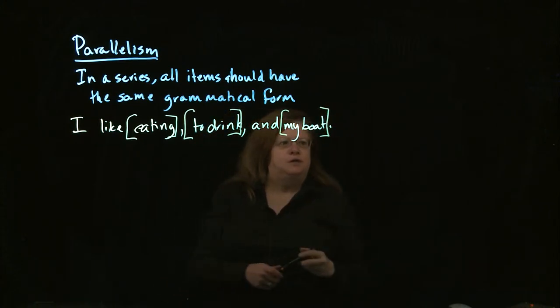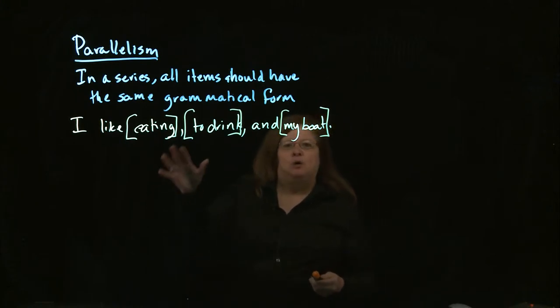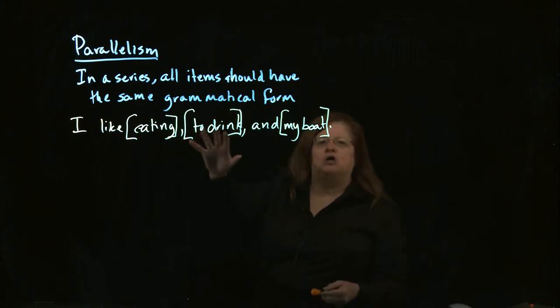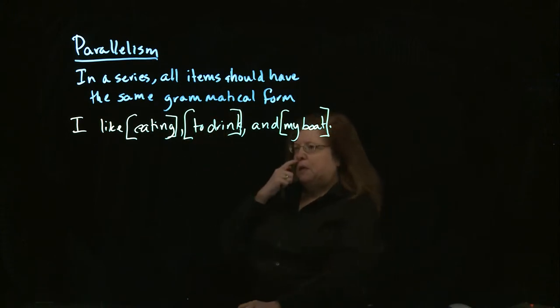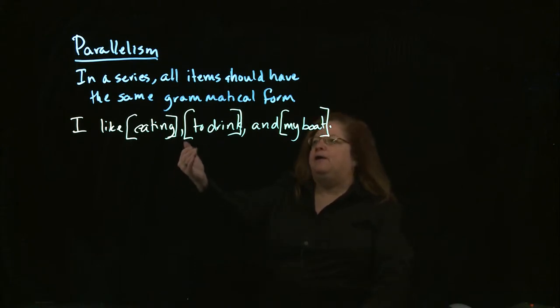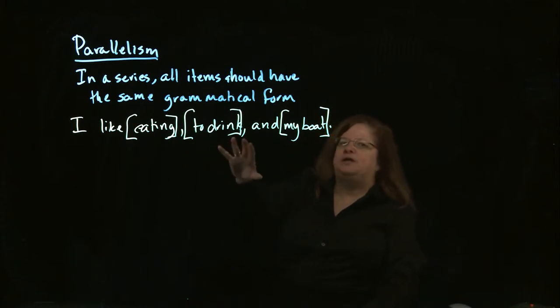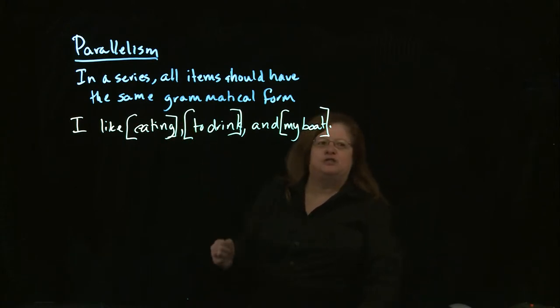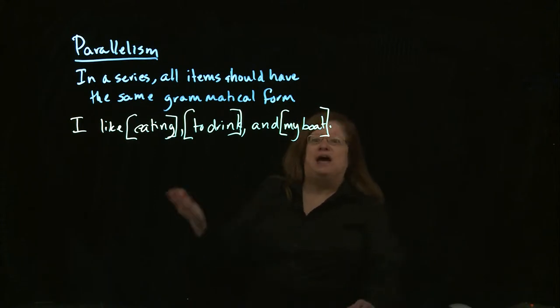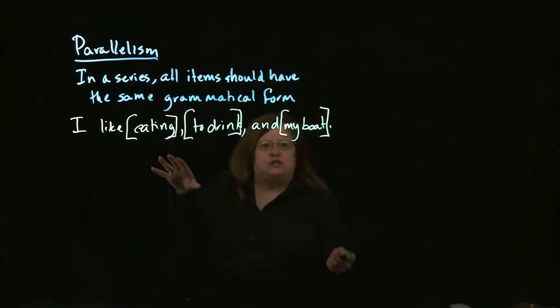So grammatically, this one is already correct, but it's not parallel, and so it's harder for the reader to follow. So what we want to do then is fix this in a way that the reader can follow it. And what we want to do then is make these things grammatically the same. Right now we have three grammatical structures. We have an -ing verb, we have a to form of a verb, and we have a noun. So we have these things that don't match.